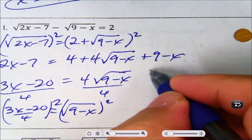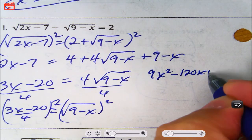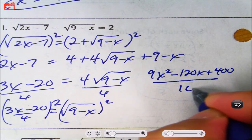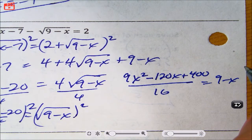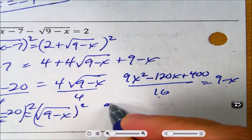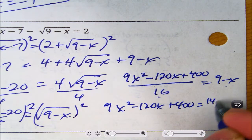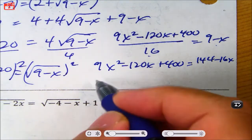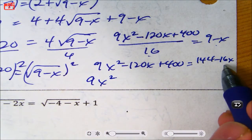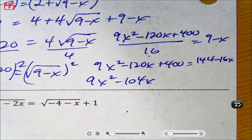So (3x minus 20) squared gives 9x² minus 120x plus 400 over 16, and that equals 9 minus x. Now I multiply through by 16: that gives 9x² minus 120x plus 400 equals 144 minus 16x. Moving everything to the left: 9x² minus 104x plus 256 equals 0.